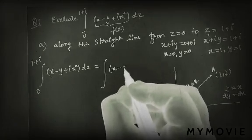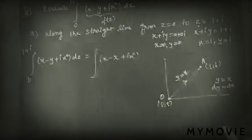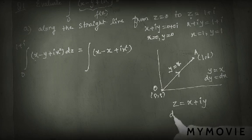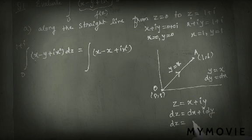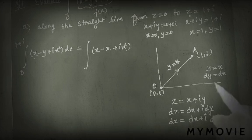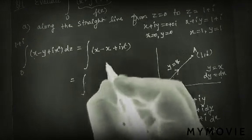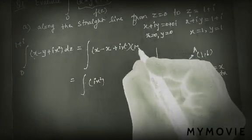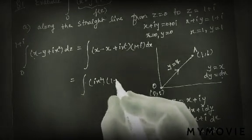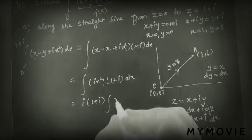So wherever y appears, we replace it with x (y equals x). For dz, we have dz equals dx plus i·dy. Since dy equals dx, we can write dz equals dx plus i·dx, which means dz equals (1 + i) dx. So the value of dz becomes (1 + i) dx.